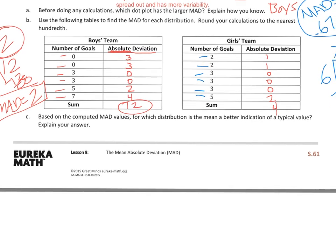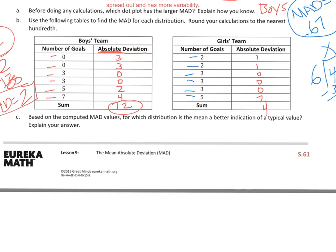So, based on the computed MAD values, for which distribution is the mean a better indication of a typical value? And, we want to go with the girls' team, because the measure of their variability is less. It's 0.67 as a MAD, as opposed to the boys, which is higher at 2 for their mean absolute deviation. So, there's my answer statement right there.